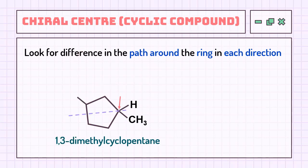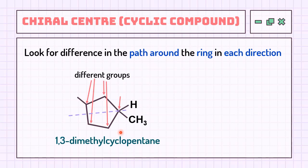In another cyclic compound example, we check the carbon of interest using a point of symmetry to compare both pathways around the ring. If we compare the two pathways in terms of the groups present and they have different groups, then this carbon is considered a chiral carbon.